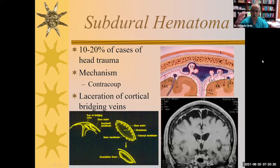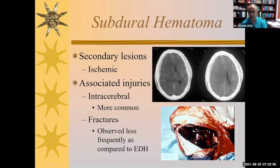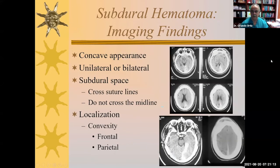Subdural hematomas occur beneath the dura. They're often associated with head trauma, reflect the sequelae of a contrecoup lesion, and are associated with laceration of the cortical bridging veins. This coronal contrast-enhanced image nicely demonstrates these cortical bridging veins — you can imagine the brain shaking inside the head and these cables snapping and causing hemorrhage. They're located underneath the dura, follow the inner table of the skull, have a concave appearance, and can cross suture lines. They can be found unilaterally or bilaterally, can be interhemispheric, or located above the tentorium cerebelli.